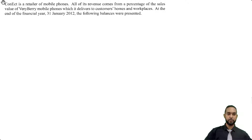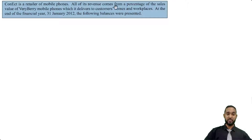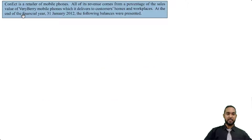As per usual, we're going to take a read of the information before we jump into doing the question. It says Connect is a retailer of mobile phones. All of its revenue comes from a percentage of the sales value of VeriBerry mobile phones, which it delivers to customers' homes and workplaces. At the end of the financial year, 31st Jan 2012, the following balances were present.